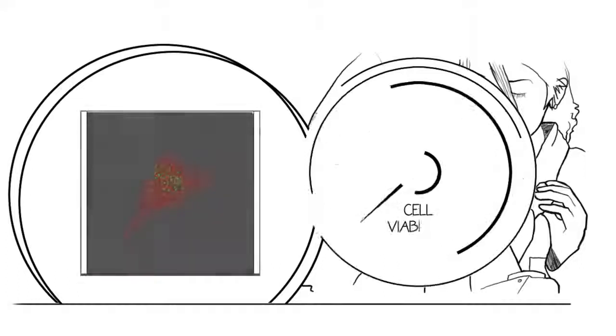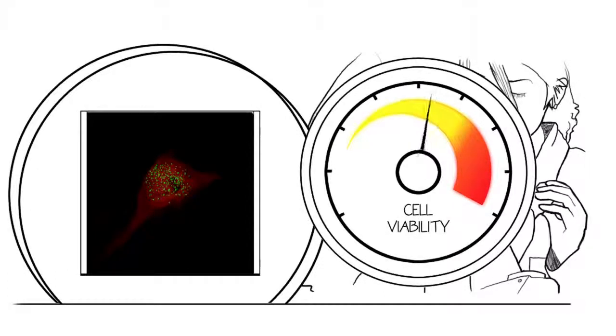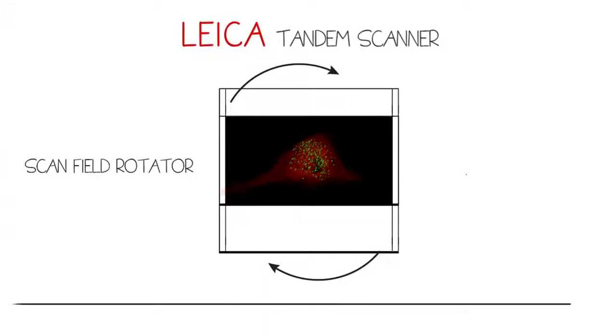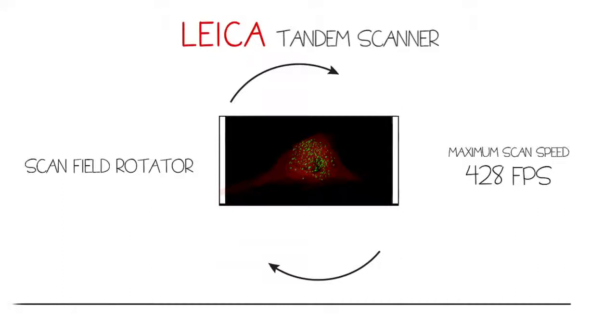The Resonance Scanner provides the benefit of having a short dwell time, which reduces laser exposure and prolongs cell viability. To generate images even faster than 40 frames per second, a scan field rotator can orient the region of interest to increase speed. This limits line collection in the y-direction,